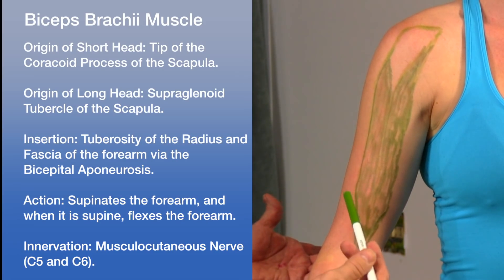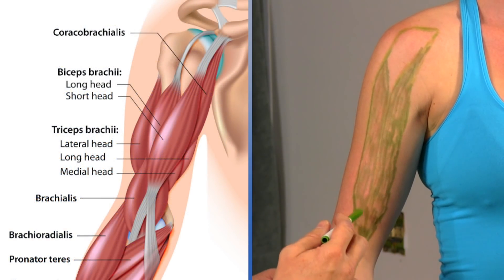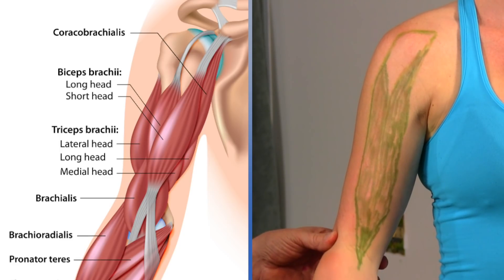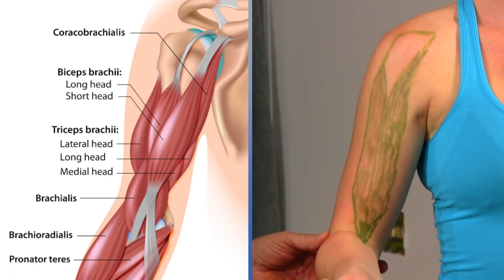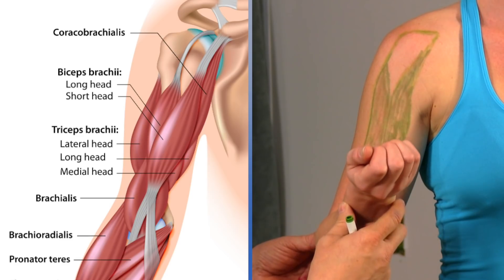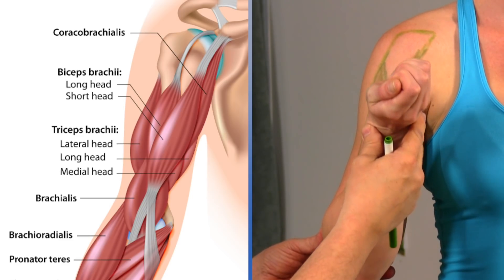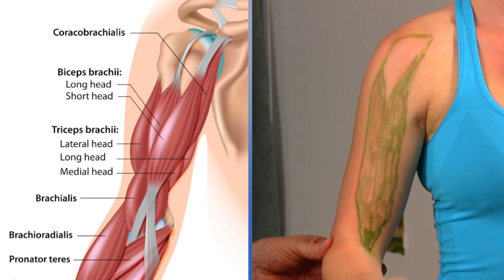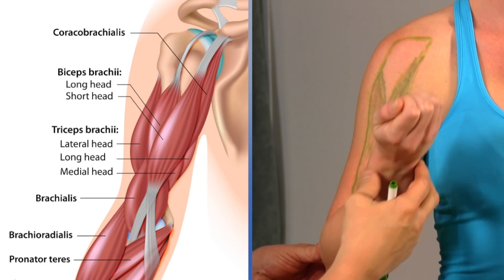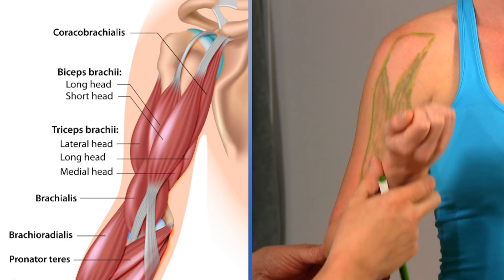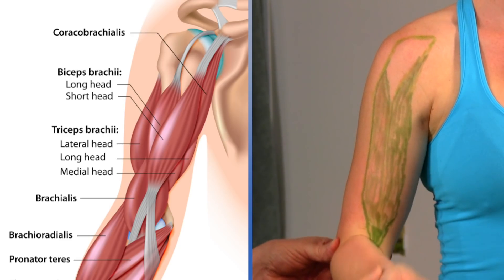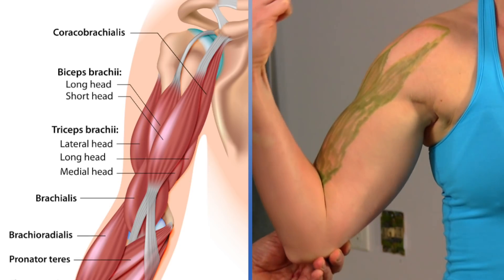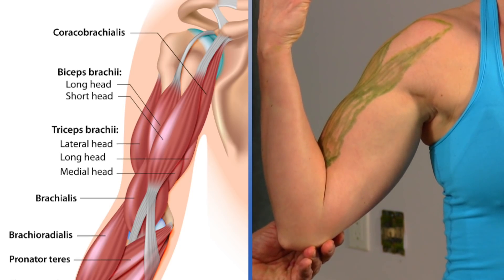The biceps brachii is the primary elbow flexor and also supinates the radius at the elbow. When the elbow is flexed and the forearm is supinated, contraction of this muscle is very visible on the anterior part of the arm.